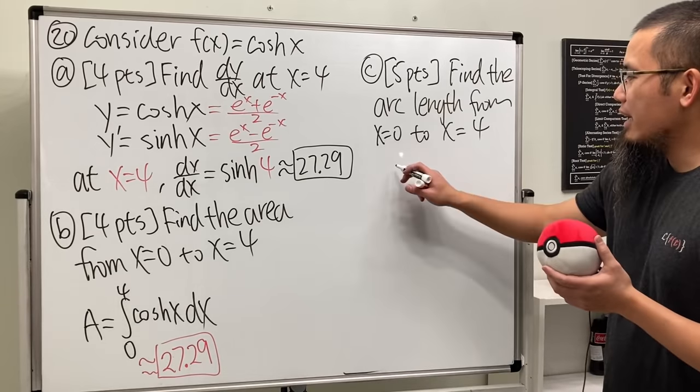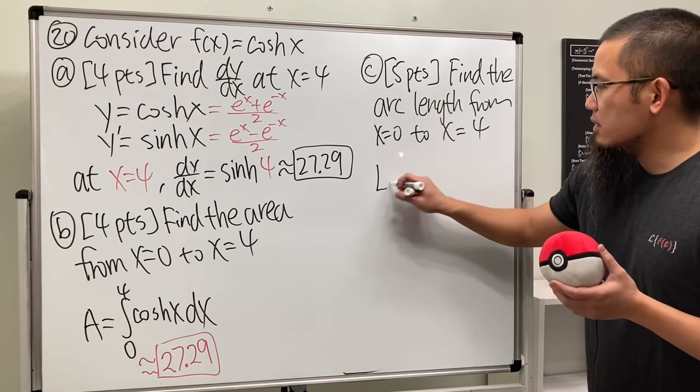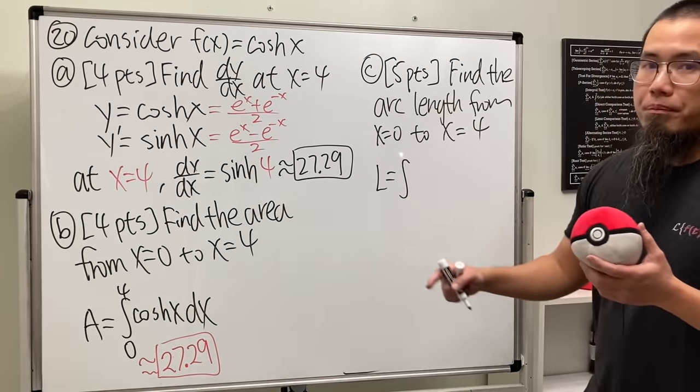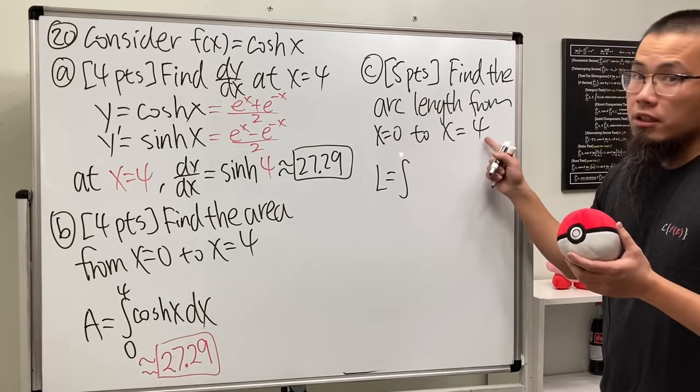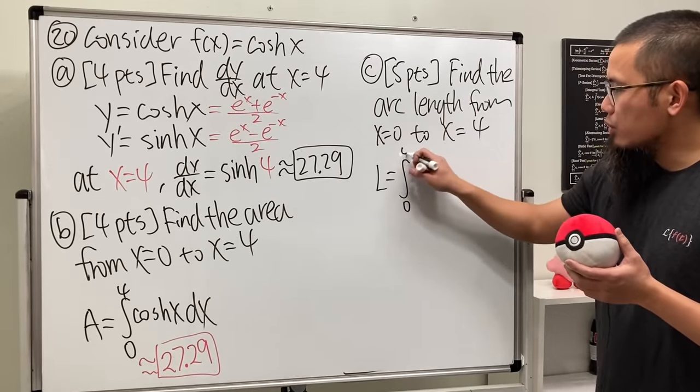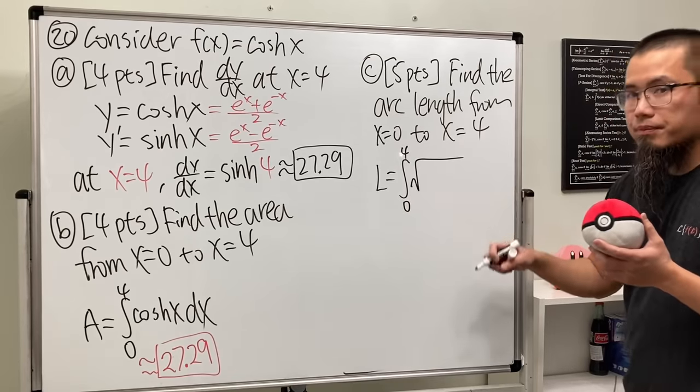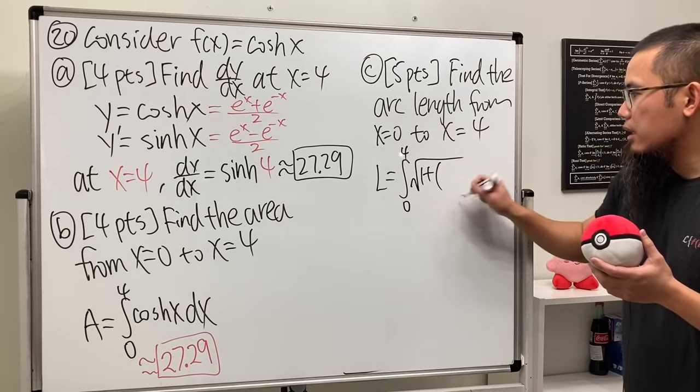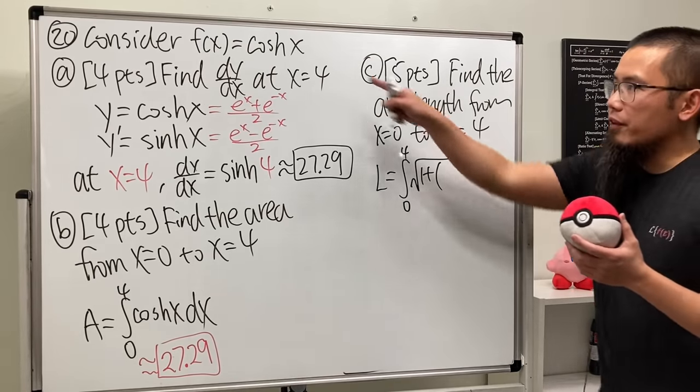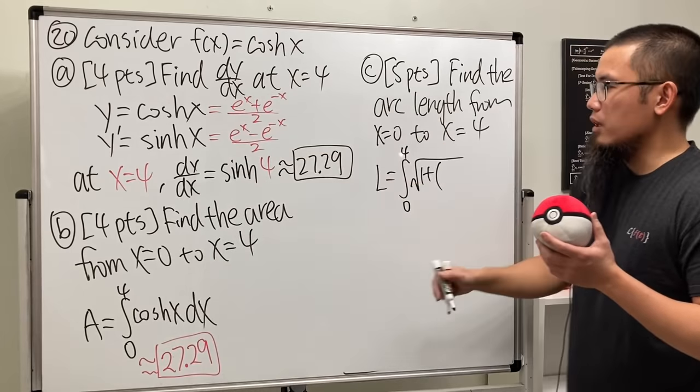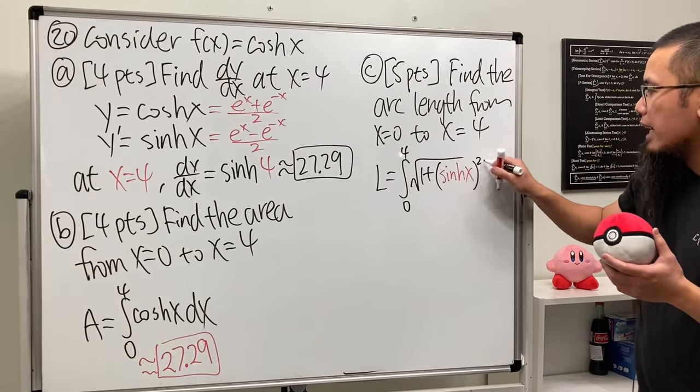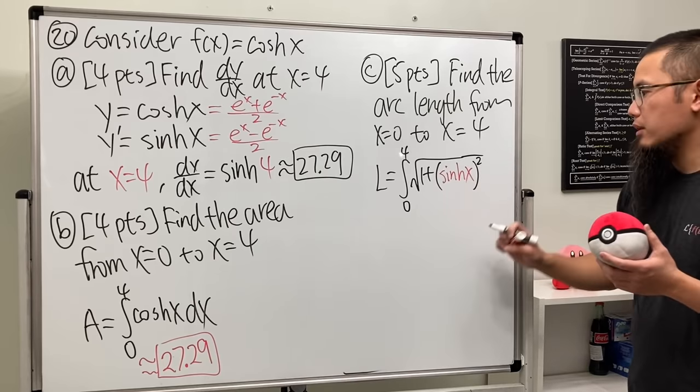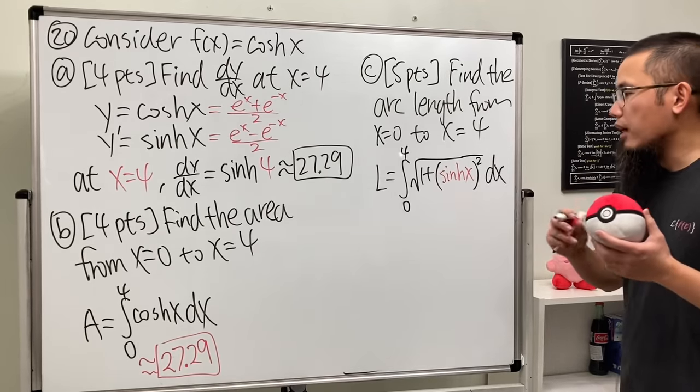For this one, you have to know the arc length formula. The arc length is going to be the integral, because we are given y as a function of x, so it's the integral in the x world from 0 to 4. You open the square root, and then you have 1 plus the derivative of the function, which we found is sinh(x), and then we square that.